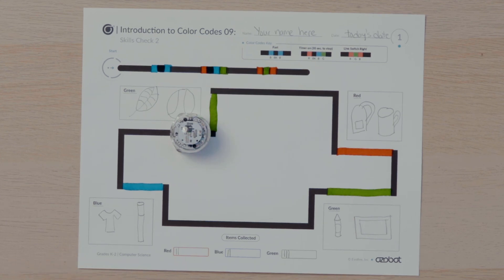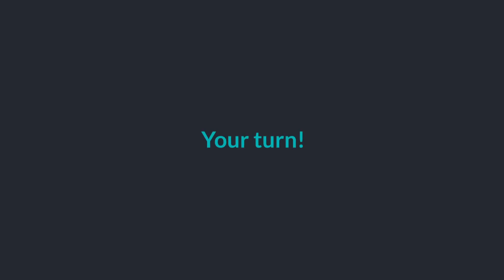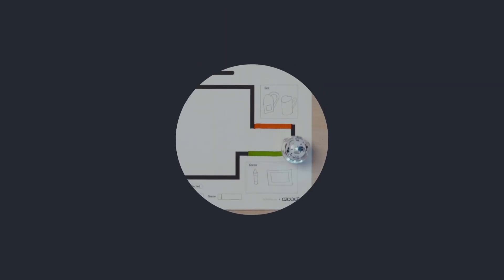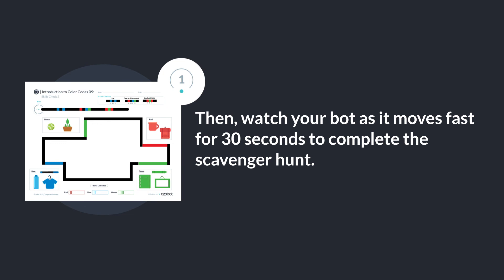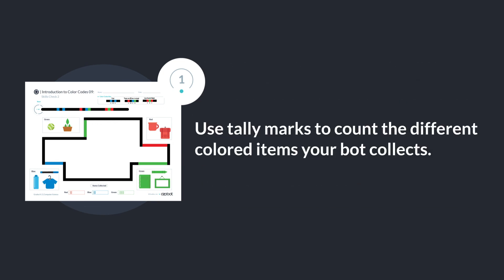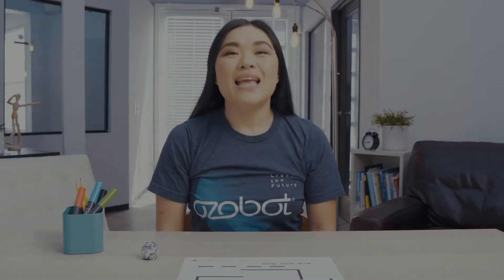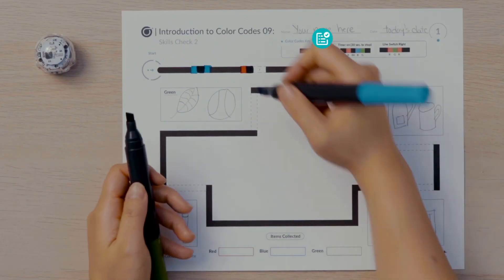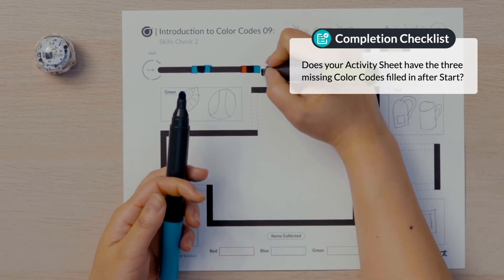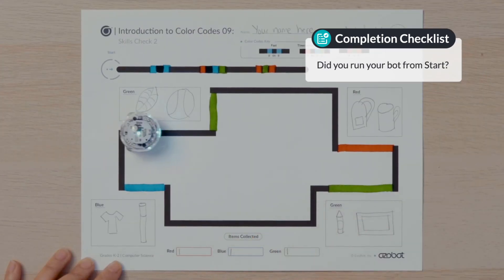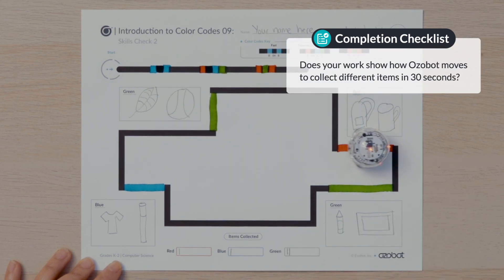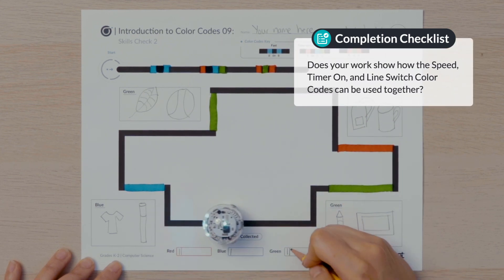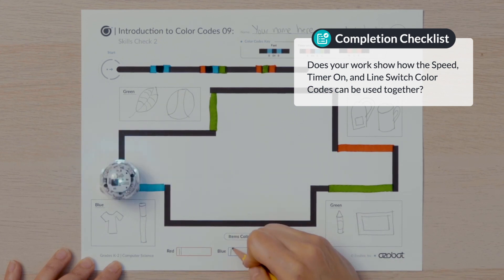Now it's your turn to play with your bot. Put your bot on start, then watch it move fast for 30 seconds to complete the scavenger hunt, using tally marks to count the different colored items it collects. Did you complete the skills check? Does your activity sheet have the three missing color codes filled in after start? Did you run your bot from start? Does your work show how Ozobot moves to collect different items in 30 seconds, and how the speed, timer on, and line switch color codes can be used together?